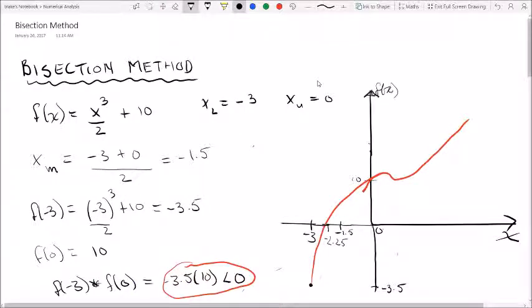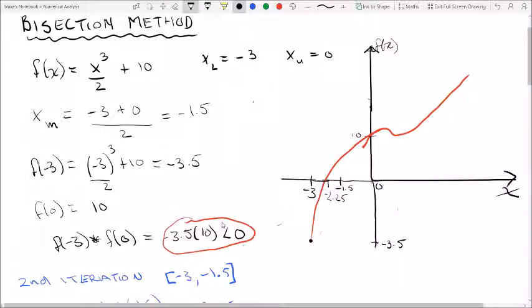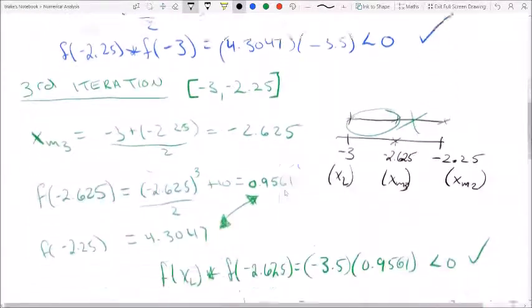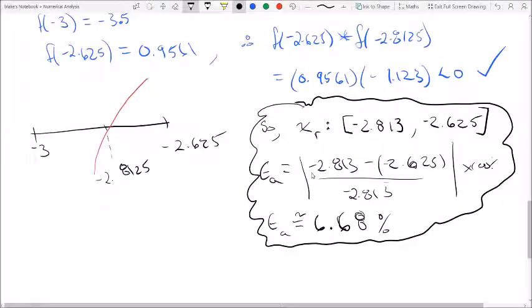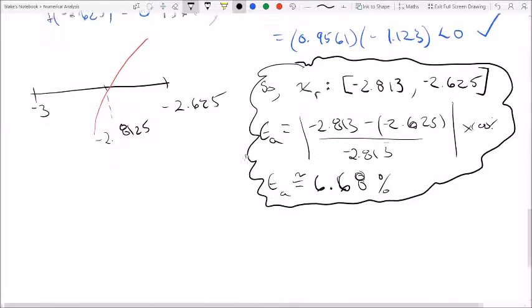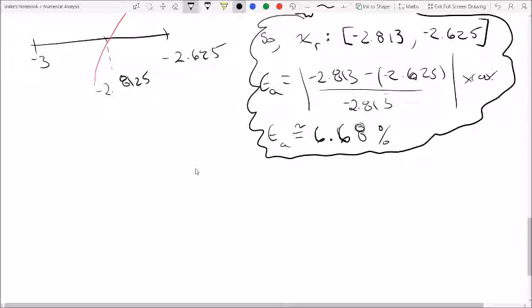So just to recap here: we've looked at our function, plugged in all of our root values given, we've solved for those values, and we've done our conventional check looking at the two values multiplying by each other. If the multiplication of the two function values at those points is less than 0, then we know that it's going to be between that interval because we need a change in sign going from left to right. It has to cross over, and therefore this multiplication check must be true. So it was true for the intervals that we discussed, and we now have found xR, which is the root of the function between the given intervals of -2.813 and -2.625 with an associated error of 6.68%. So that is the bisection method of numerical analysis.